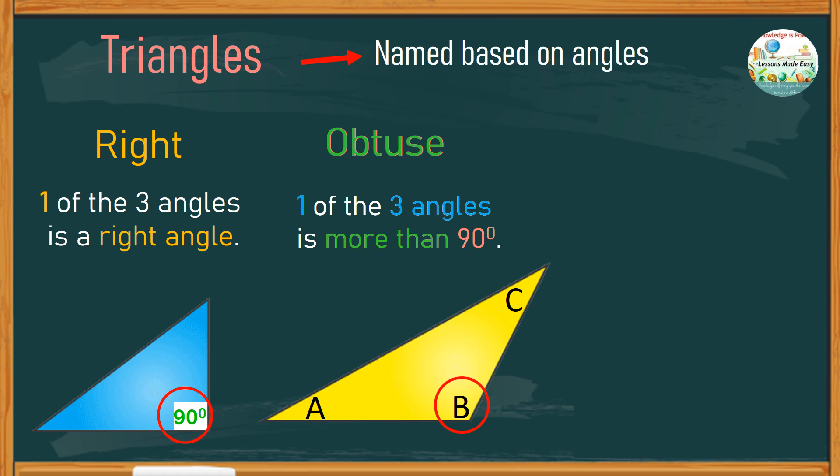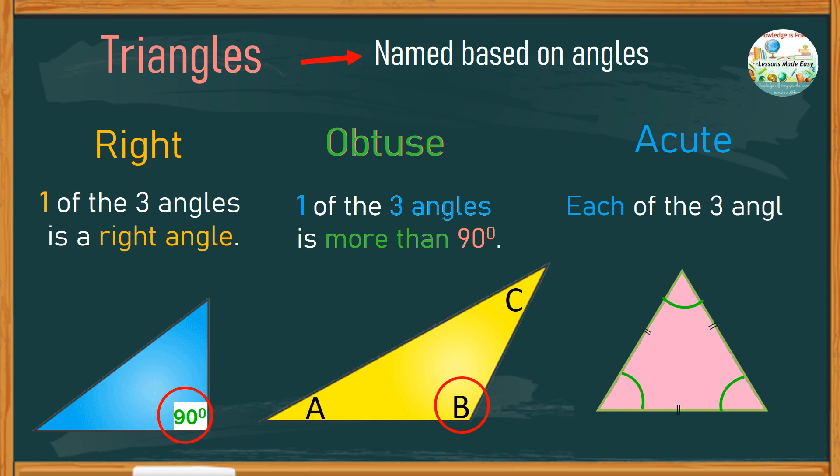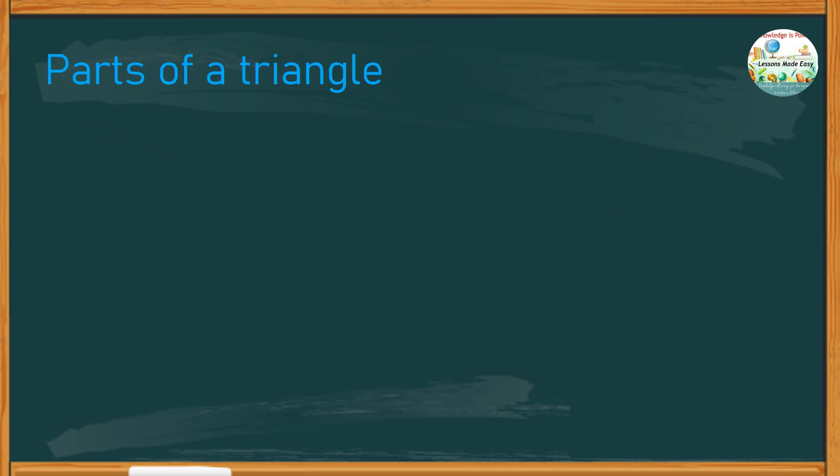And in some cases, all of the three angles are less than 90 degrees. Just like the equilateral triangle, where all the angles are the same, all the angles are 60 degrees. This type of triangle is called an acute triangle. Look at this example. Each of the three angles is less than 90 degrees. This triangle, therefore, is an acute triangle.